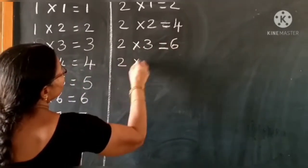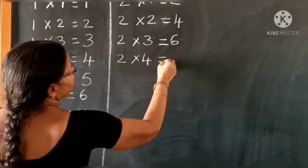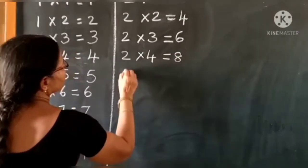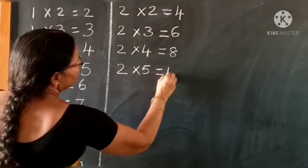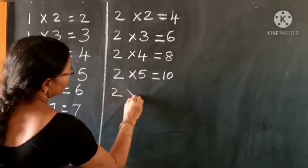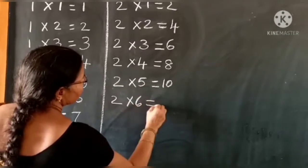Two fours are eight, two fives are ten, two sixes are twelve.